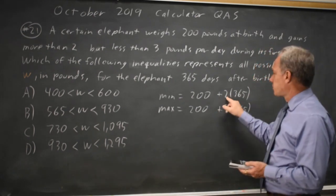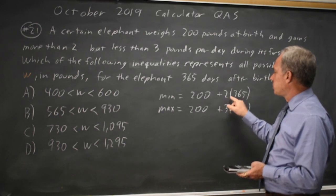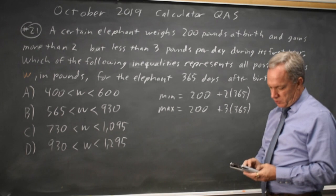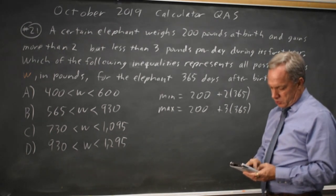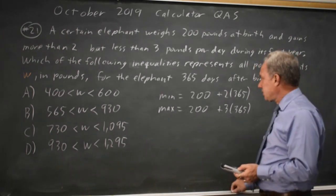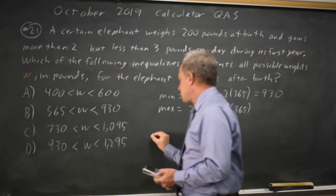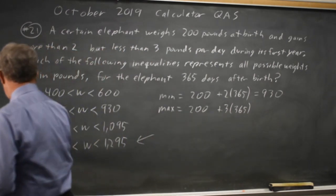We gain more than 2 pounds per day, so we'll weigh more than 2 times 365, more than our starting weight of 200. So 200 plus 2 times 365 gives me 930, and I already know my answer is D, because it's the only one that starts at 930.